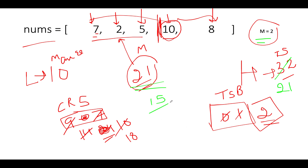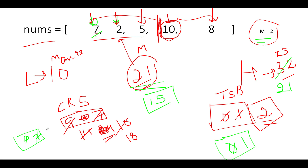We reduce the high pointer from 32 to 21. The new mid is (10+21)/2 = 15. We restart the iteration with max=15: 7 (count=1, CRS=7), add 2 (CRS=9), add 5 (CRS=14), all below 15. Next, 14+10=24 exceeds 15, so we create a new subset at 10 (count=2, CRS=10).